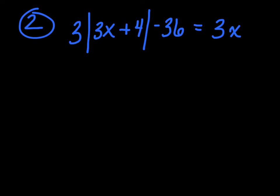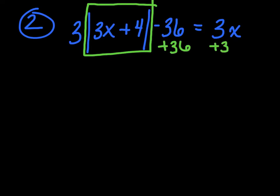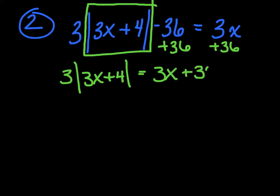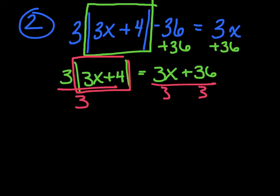Let's try one more equation — I tried to make this one as ugly as it gets. Step one: isolate the absolute value. Add 36 to the other side, so I've got 3|3x + 4| = 3x + 36. The absolute value is not alone yet — there's a 3 in front. Divide everybody by 3, so I've got |3x + 4| = x + 12. Now the absolute value is by itself.